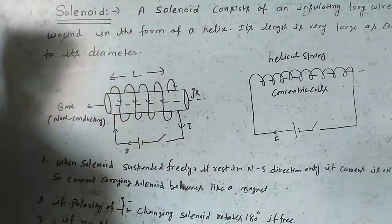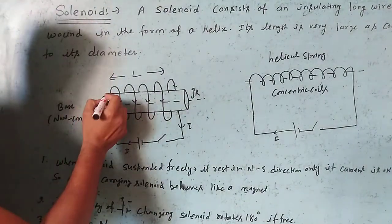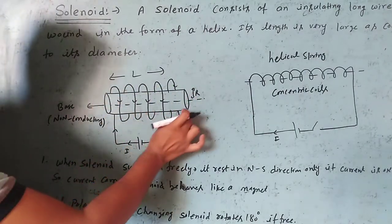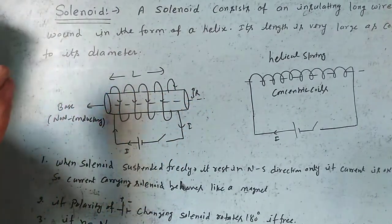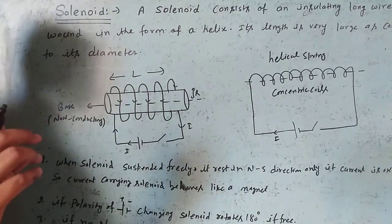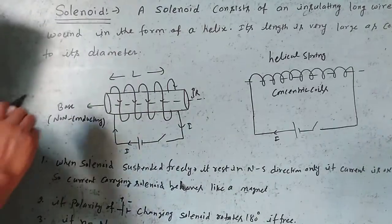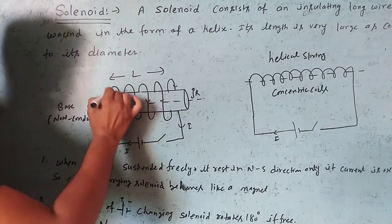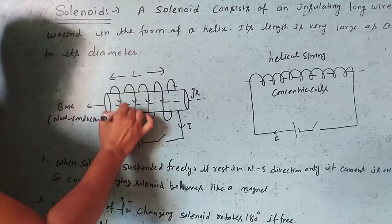Consider a solenoid. This is the base, made of non-conducting materials like cardboard or other things. This is a long insulating wire.